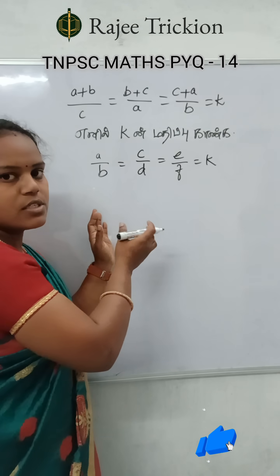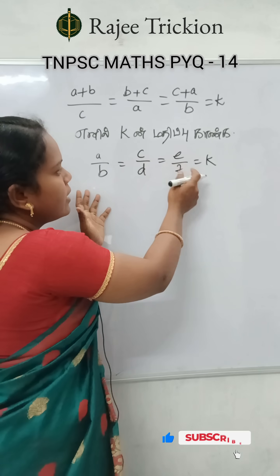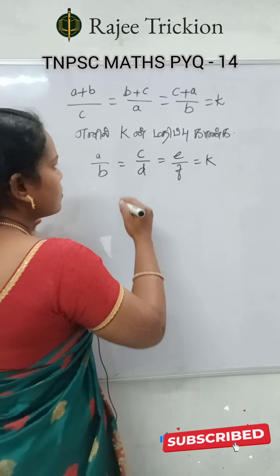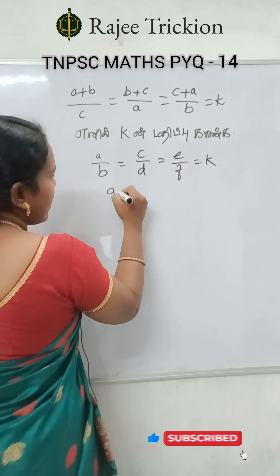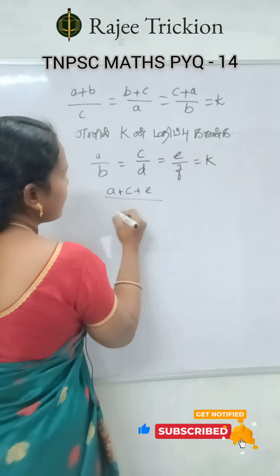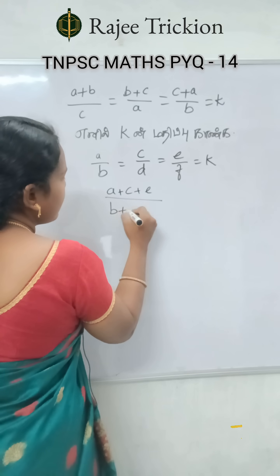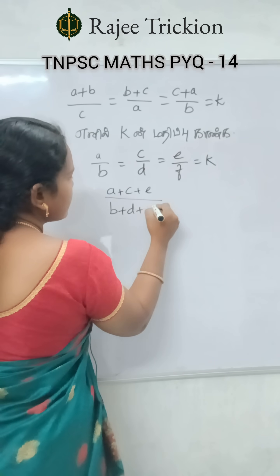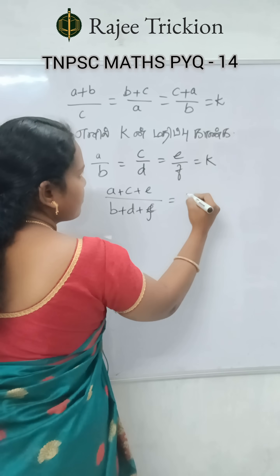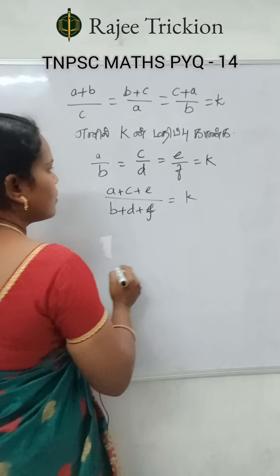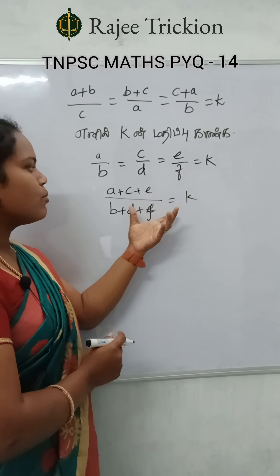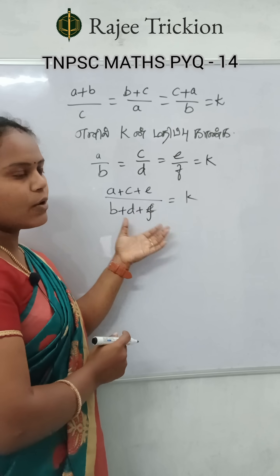So, in this format, we have to add the denominator to the numerator. So, A plus C plus E divided by B plus D plus F equal to K. That is, add the denominator to the numerator and the numerator to the denominator.